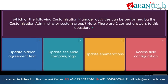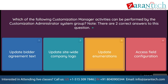Question: Which of the following customization manager activities can be performed by the customization administrator system group? Note, there are two correct answers to this question. Option 1: update bidder agreement text. Option 2: update site-wide company logo. Option 3: update enumerations. Option 4: access field configuration.